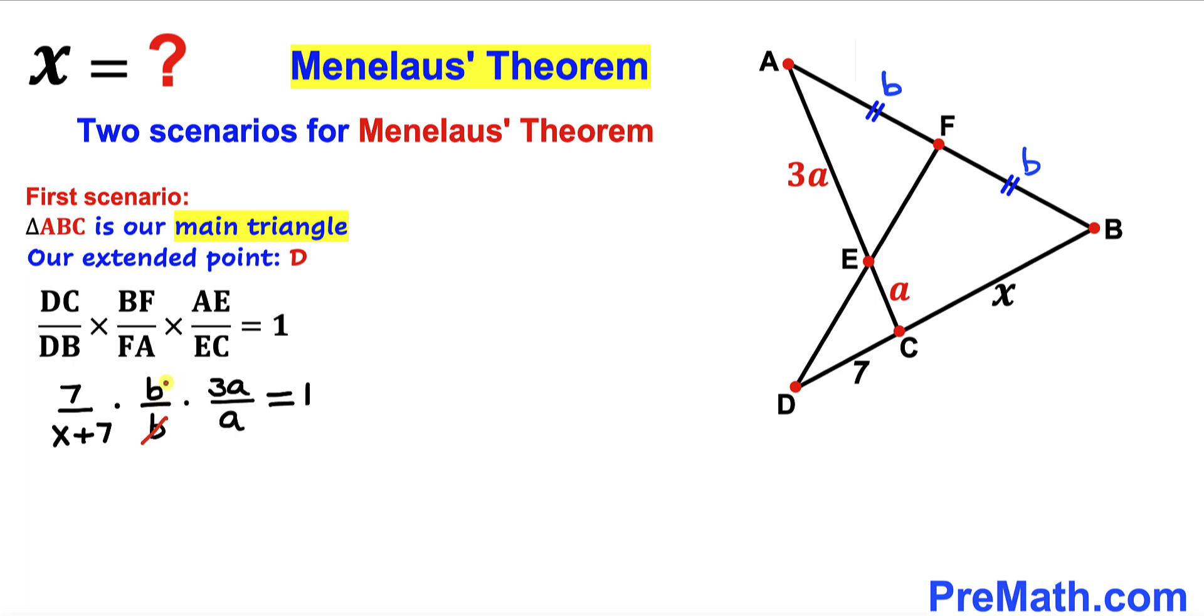And now we can see b and this b they cancel each other out. A is gone with this A. So on the left hand side we got 7 times 3. On the numerator there's going to be 21 divided by X plus 7 equals to 1.